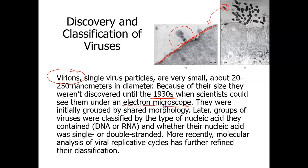There are two types of electron microscopes: a transmission electron microscope and a scanning electron microscope. Both can see viruses — one sees only the outside, and the other can see structures on the inside. Initially, when viruses were discovered, they were grouped by shared morphology, meaning if they looked alike they were grouped together. But later, that wasn't considered a good method, so they were grouped by the type of nucleic acid they had — DNA or RNA — and whether that nucleic acid was single or double-stranded.